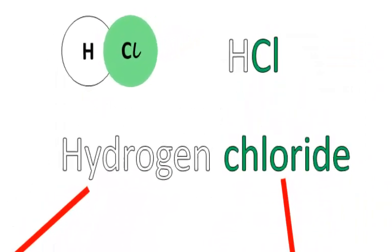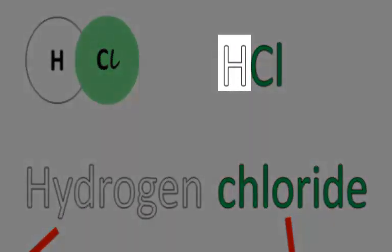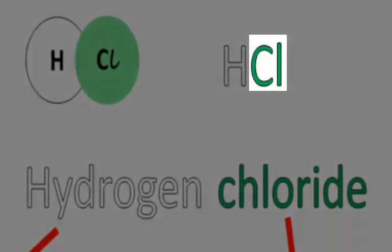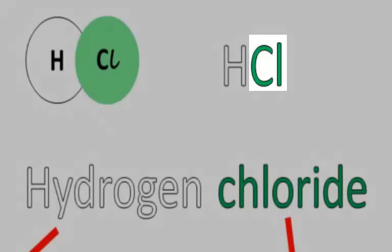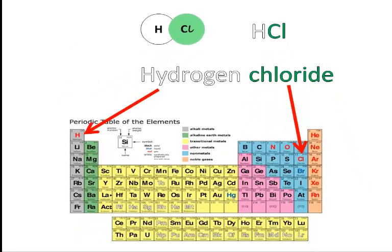HCl. In the formula, we write the H first. That's a rule for writing the formula of these acids. And then we write the non-metal, Cl, in this case. We could call this in words hydrogen chloride. And in fact, when this substance is in a gas, that is what we call it.